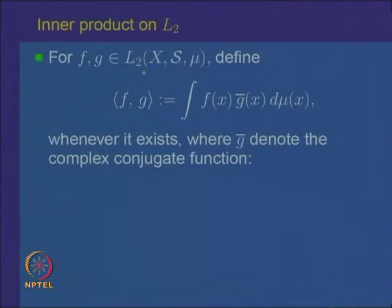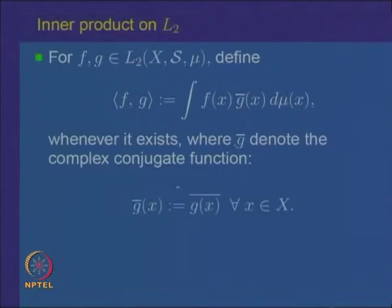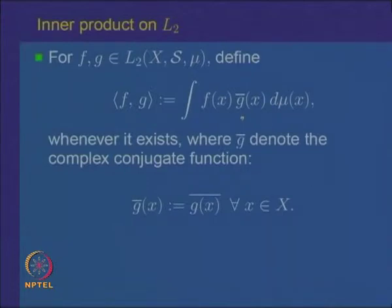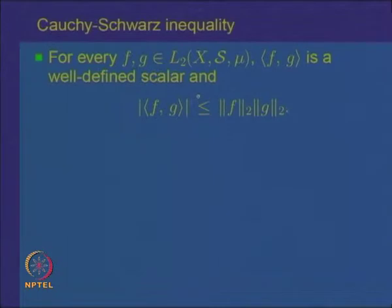For functions f and g in L² — keeping in mind our spaces are complex-valued — we define the inner product (also called dot product) of f with g as the integral of f(x) times the complex conjugate g̅(x) dmu(x), where g̅(x) denotes the complex conjugate of g(x). This is perfectly analogous to the formula in Cⁿ: the sum of aᵢ times b̅ᵢ. The first thing we want to verify is that this integral is well defined, which follows from Hölder's inequality.